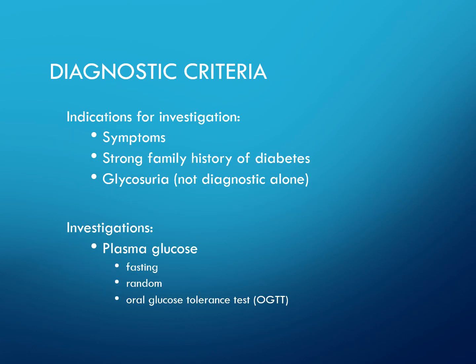When diagnosing diabetes, you look for symptoms, a strong family history, and glycosuria — although glycosuria alone is not diagnostic. You must also investigate plasma glucose: fasting glucose, random glucose levels, and the oral glucose tolerance test.